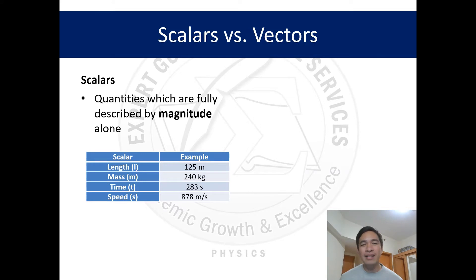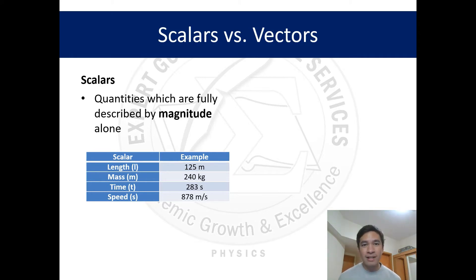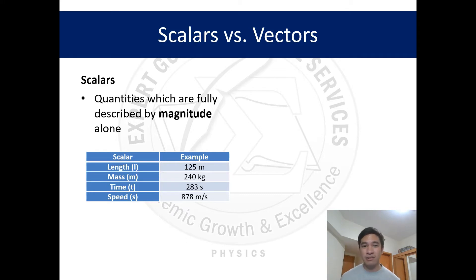Scalars are quantities which are fully described by magnitude alone. When you say magnitude, think of it as the number and the unit alone and nothing else. For example, if you look at this table, examples of scalars include length, mass, time, and speed. Take for instance length: 125 meters — it's just the number and the unit and nothing else, just the magnitude. Therefore length is a scalar quantity.